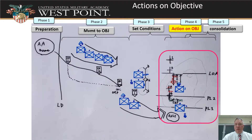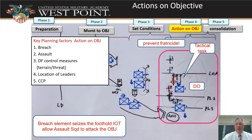Which brings us to phase four, our actions on the objective. I've highlighted that here. You can see we've got some phase lines to control how our units move across the objective towards the limit of advance. We've also got fire control measures with our target reference points. We've shown tactical tasks for those two units — second squad is breaching, first squad is clearing, and first squad is the decisive effort. We want to be able to show all of this information graphically.